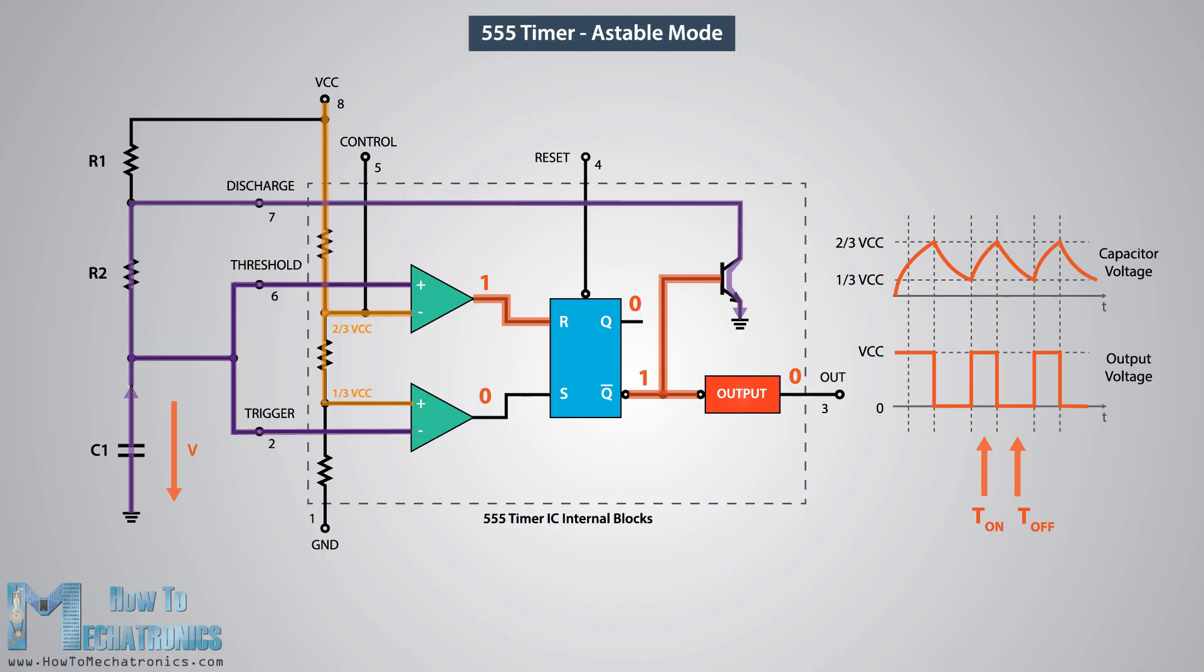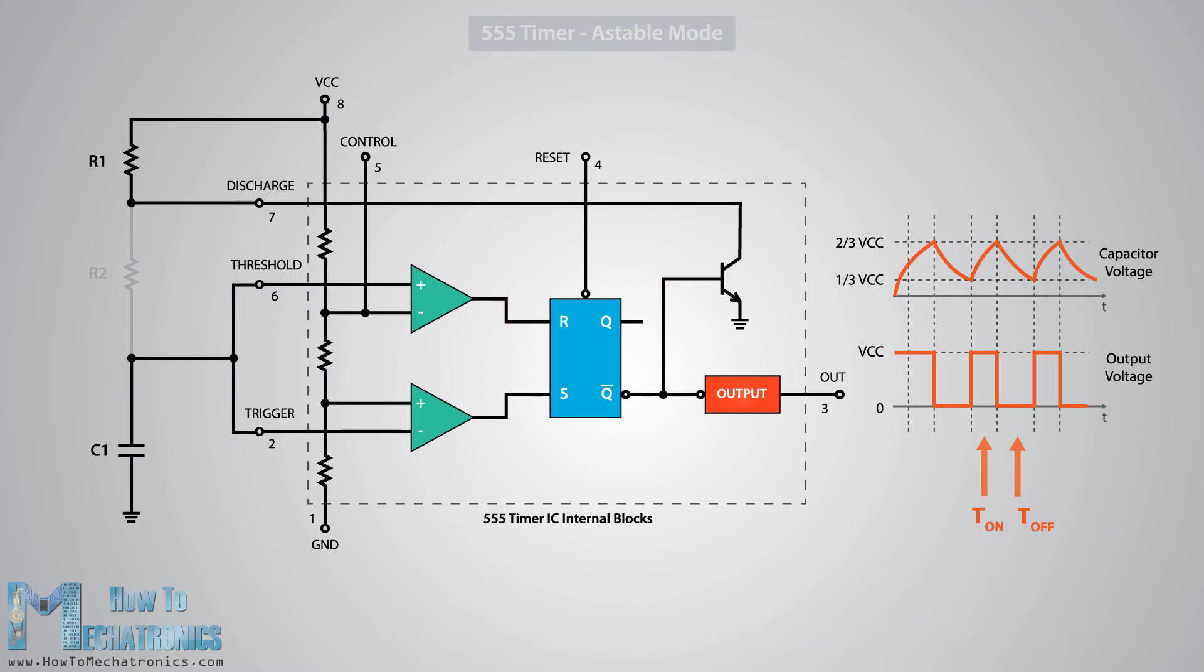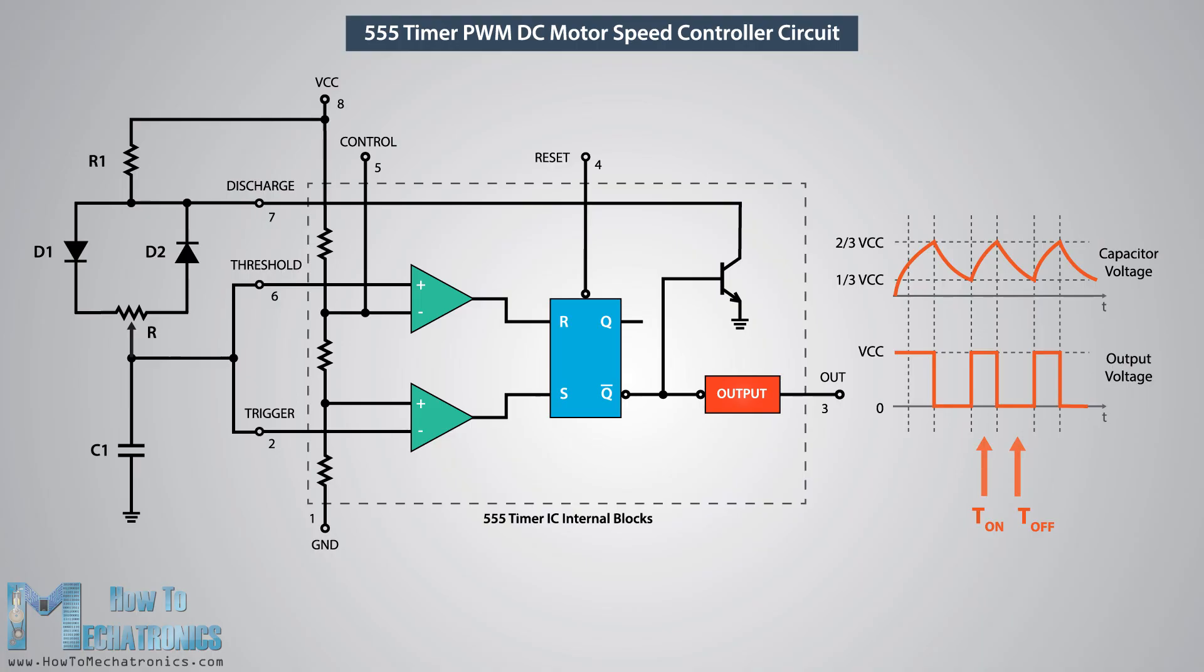So we can notice that if we change the values of any of these three components we will get different on and off times, or different duty cycle of the square wave output signal. An easy and instant way to do this is to replace the R2 resistor with a potentiometer and additionally add two diodes in the circuit.